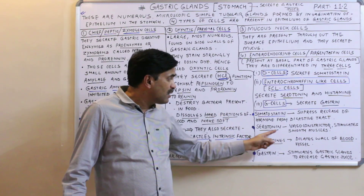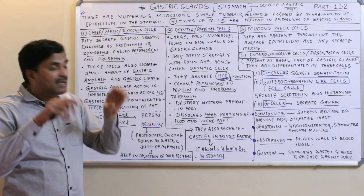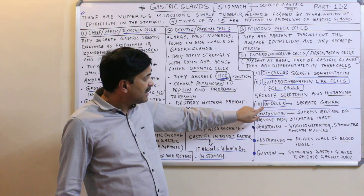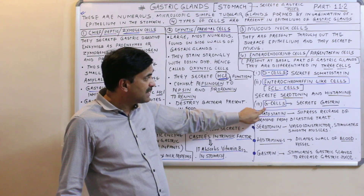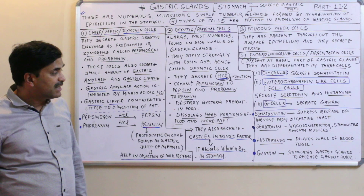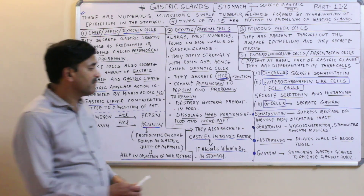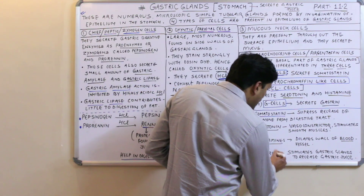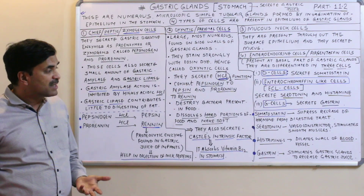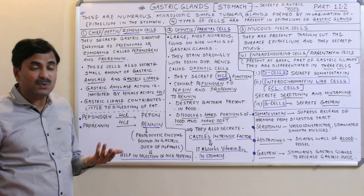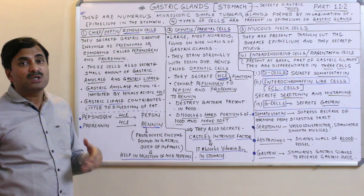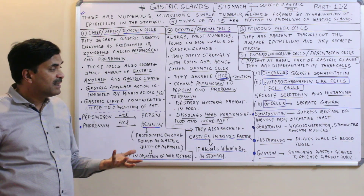The third sub-type is G cells, which are very important. G cells secrete gastrin. Gastrin is a very important hormone that stimulates the gastric glands to release gastric juice.